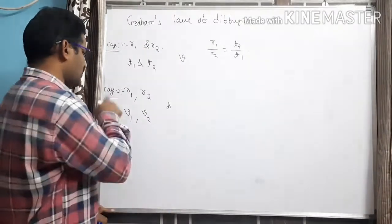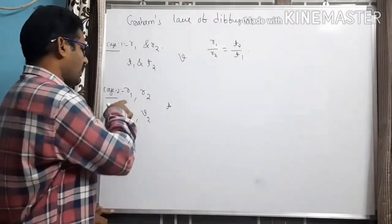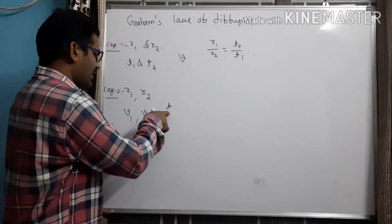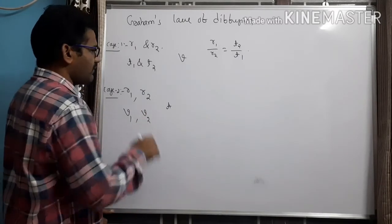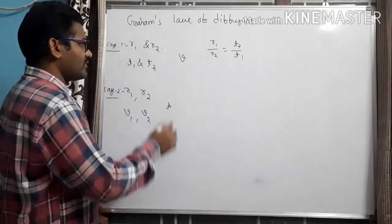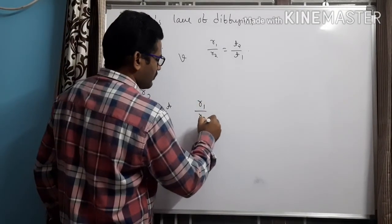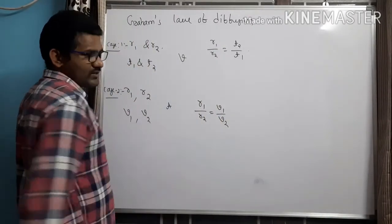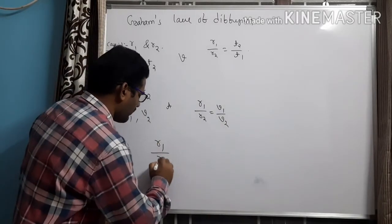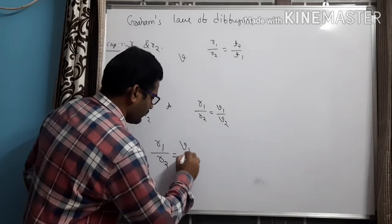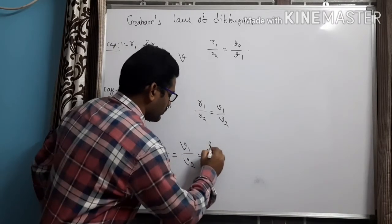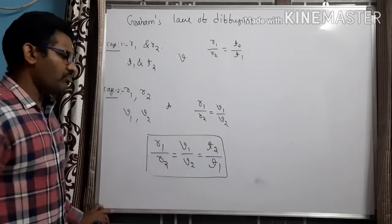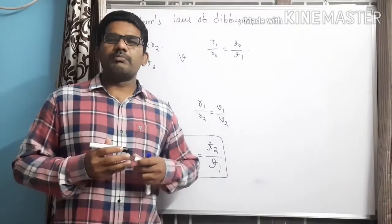In Case 2, we have two different gases with rate of diffusions R1 and R2. At the same time T, they occupy volumes V1 and V2 respectively. We can write Graham's Law as R1/R2 = V1/V2. By combining both cases, the full equation becomes: R1/R2 = V1/V2 = T2/T1. This is very important in competitive examination style questions.